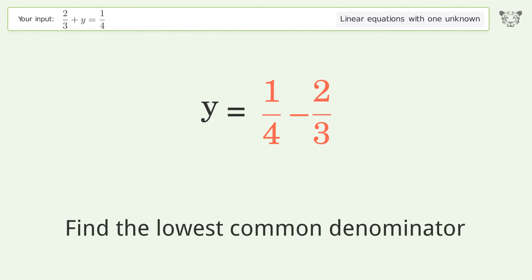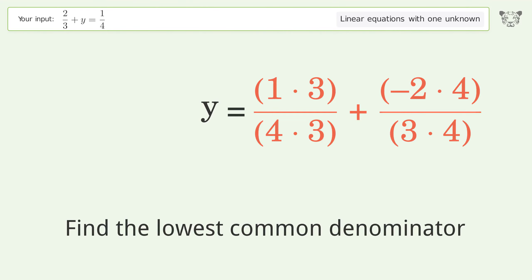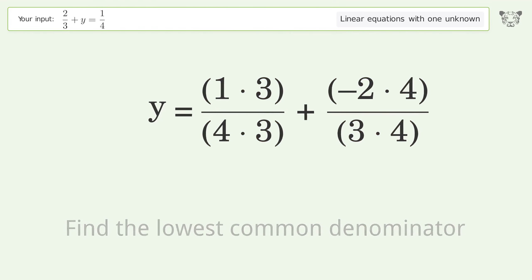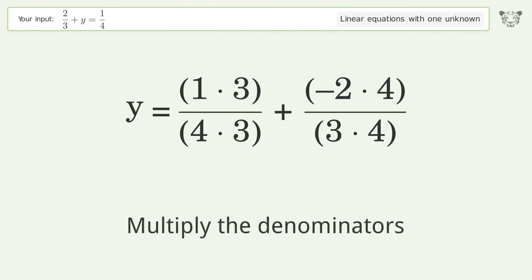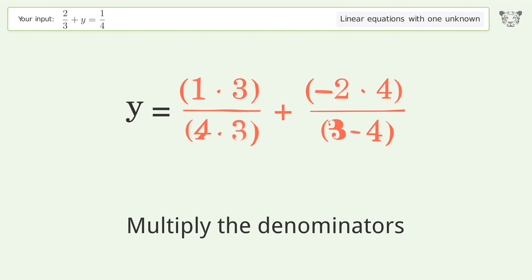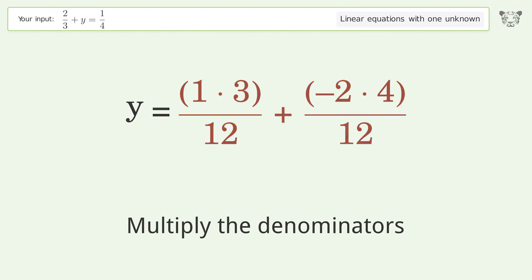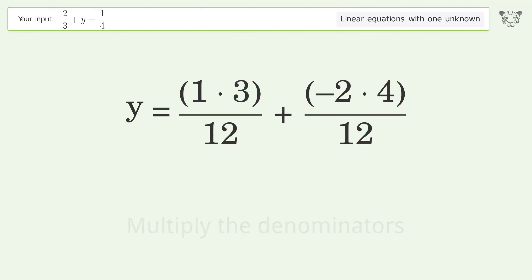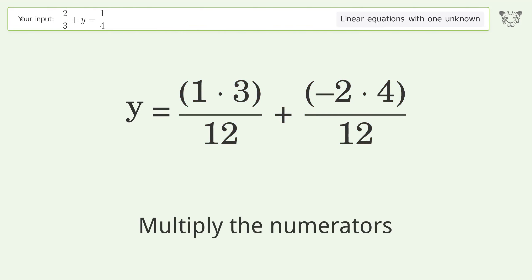Find the lowest common denominator, then multiply the denominators and multiply the numerators.